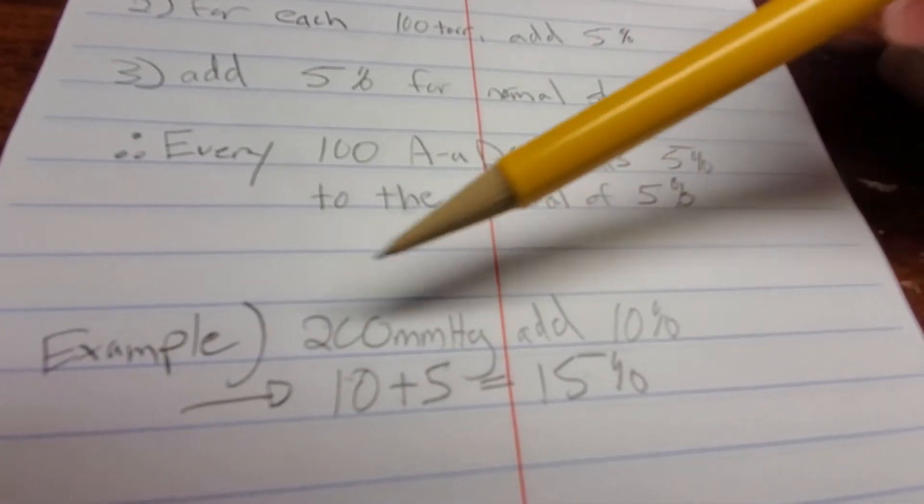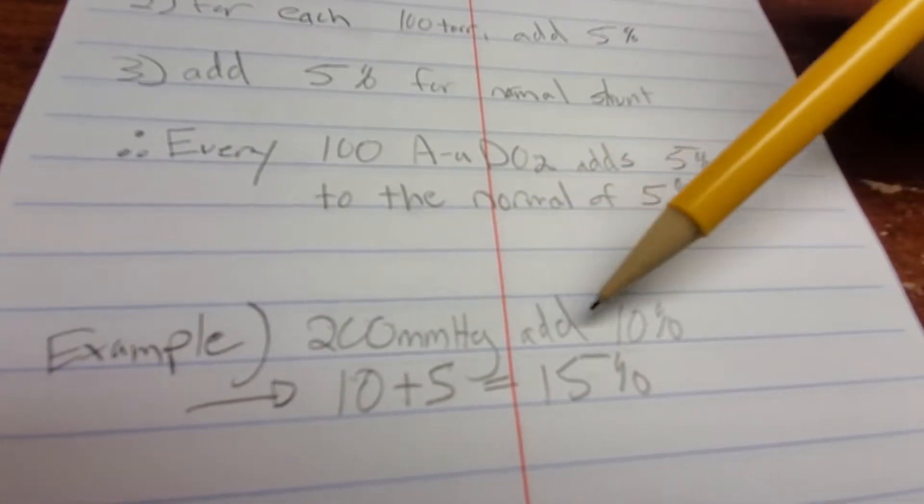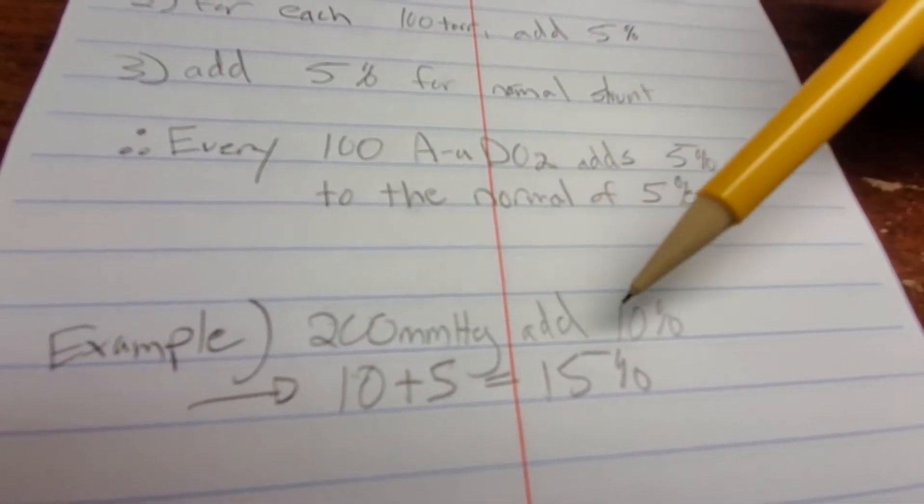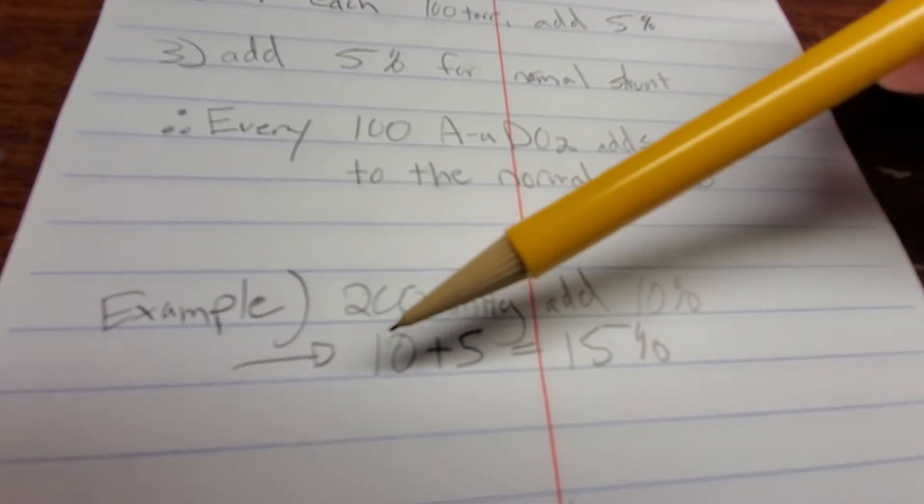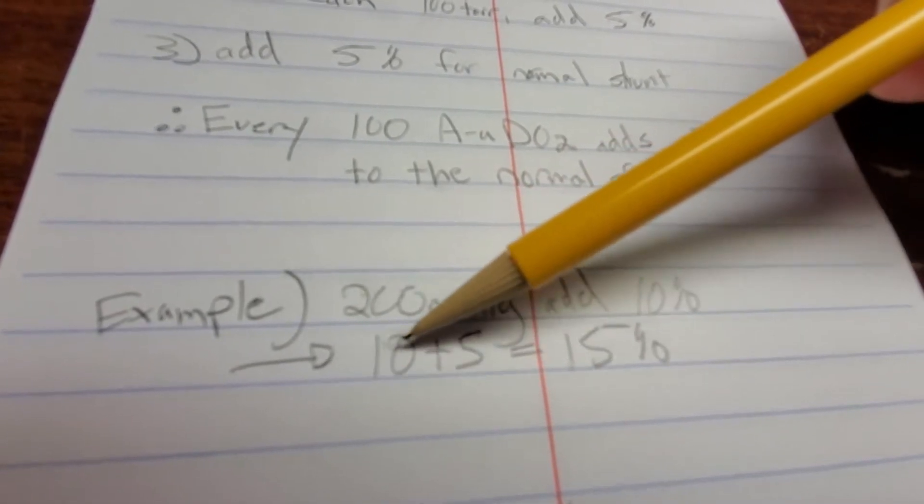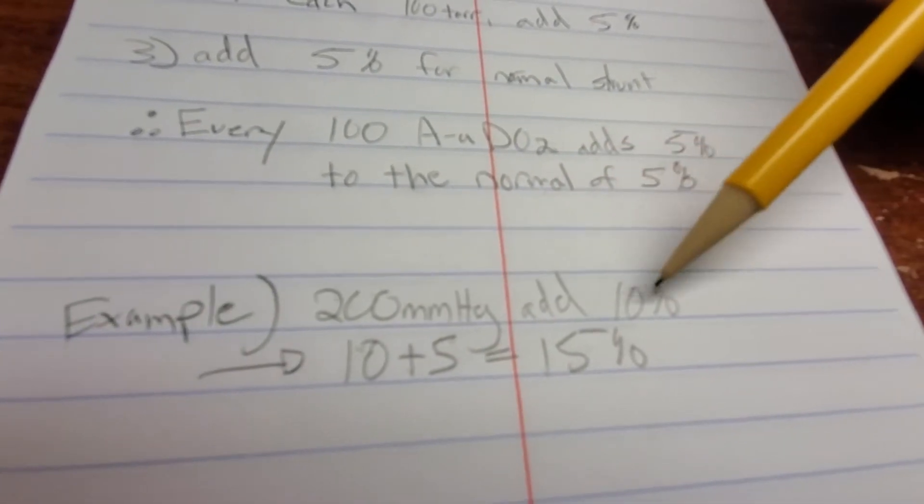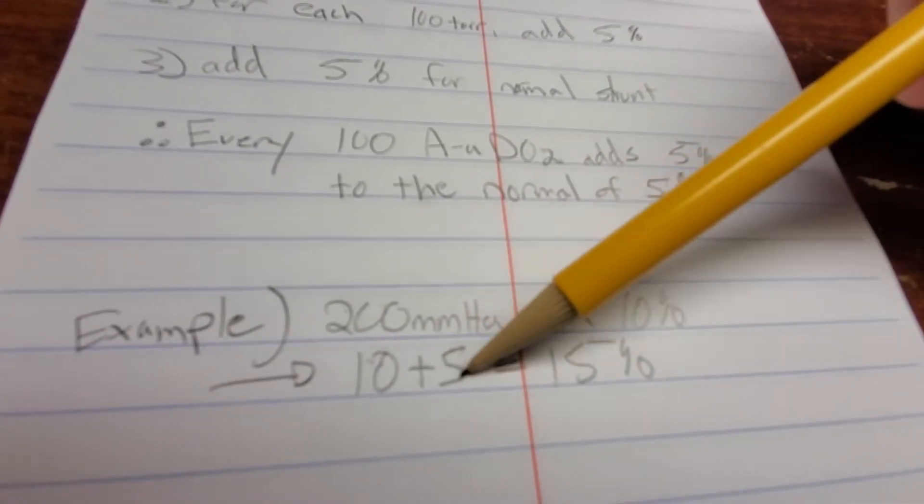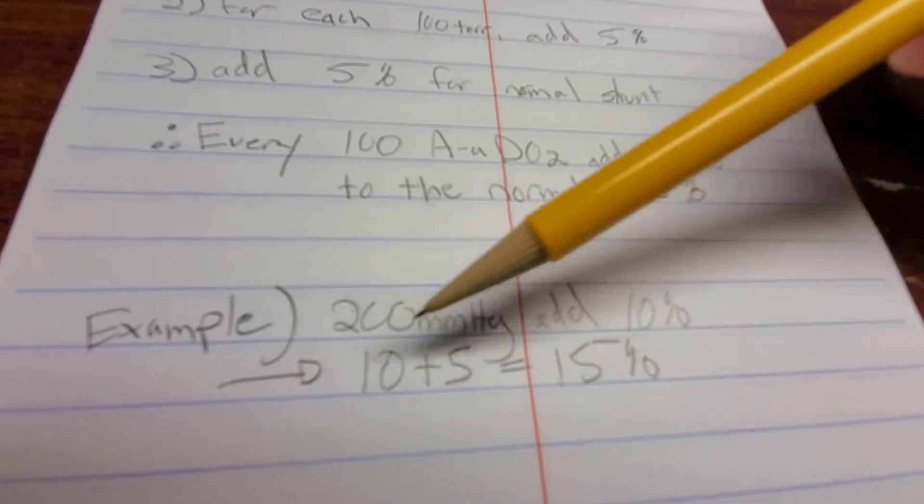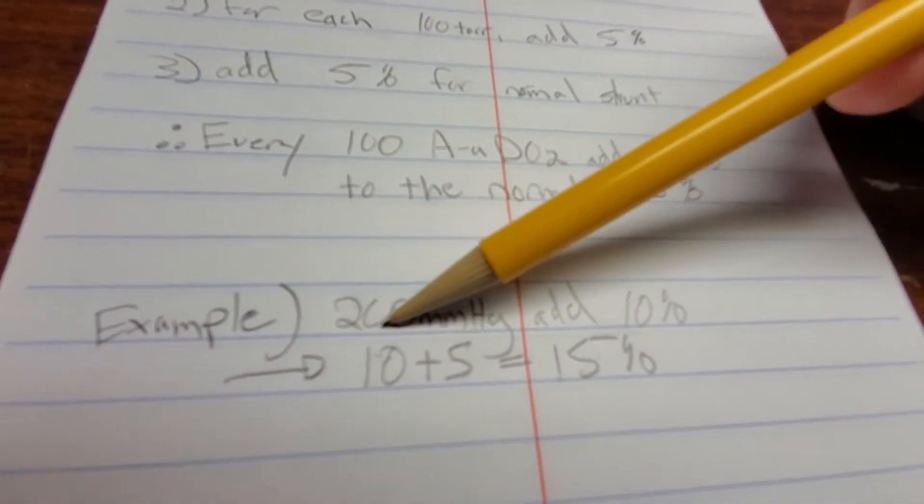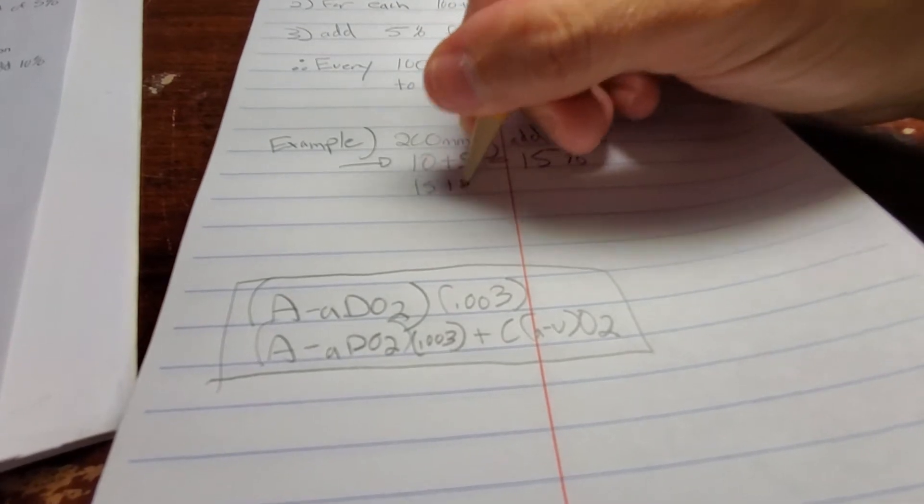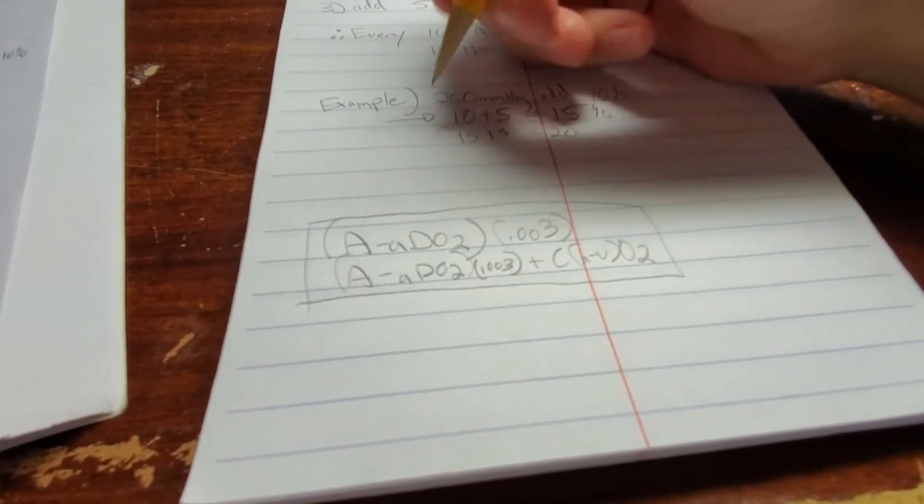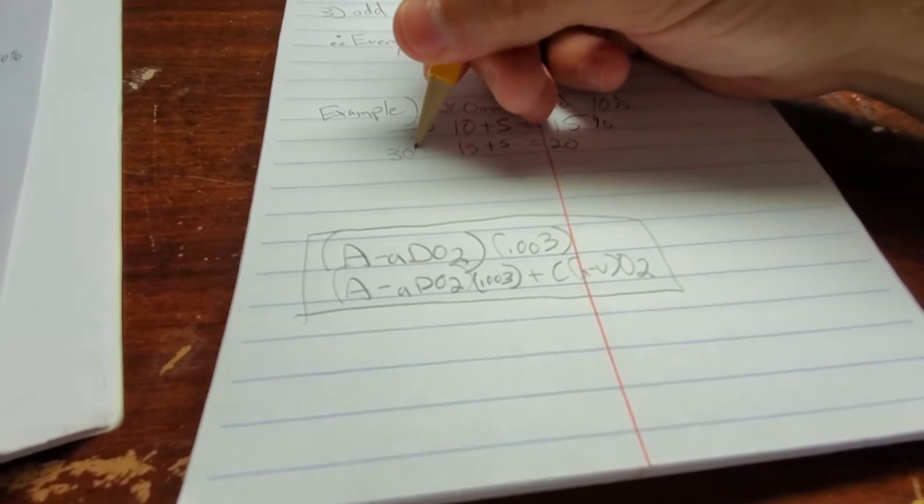If it was 300, add 15, so you just add 5 for each 100. So for this one, it's 200, which would be 10, 10, 10, and then you add 5. So you always add 5. So it gives you 15. So if this was 300, you would add, it would be 15. I put 15 here. 15 plus 5 equals 20. That would be if it was 300.